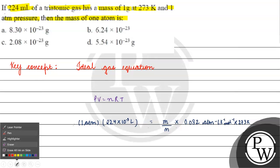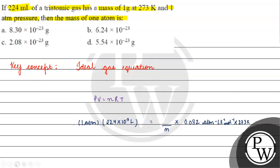Mass — mass of the gas is given as 1 gram at 273 Kelvin. So, the mass of this triatomic gas is 1 gram. Setting up: 224×10⁻³ divided by 0.082×273 equals 1 gram divided by m.